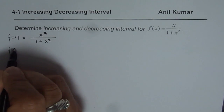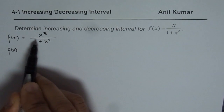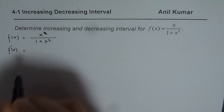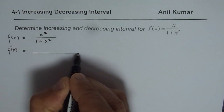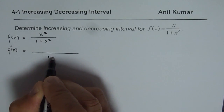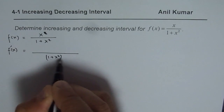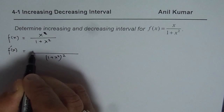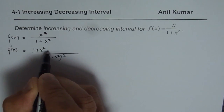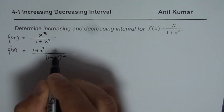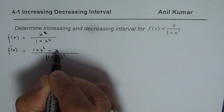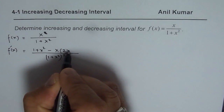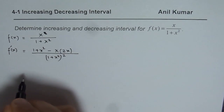The function is x / (1 + x²). We will find the derivative using the quotient rule. The denominator becomes (1 + x²)². The numerator is: derivative of x is 1, giving us (1 + x²) minus x times the derivative of (1 + x²), which is 2x.